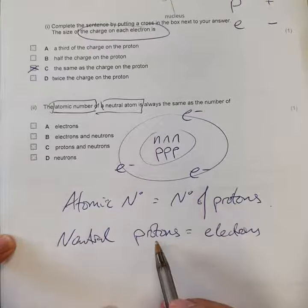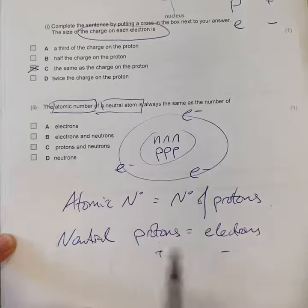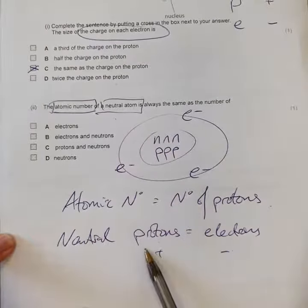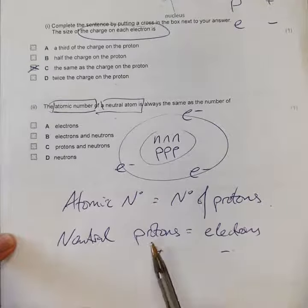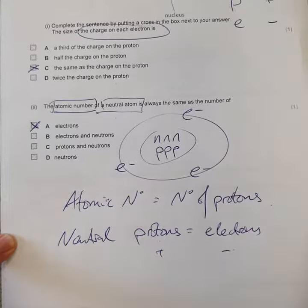Because if these are positive, these are negative, they've got to cancel each other out. So we're going to have the same number. So in a neutral atom, we have the same number of electrons and protons. And it's the protons that determine the atomic number. So it's going to be electrons. A.